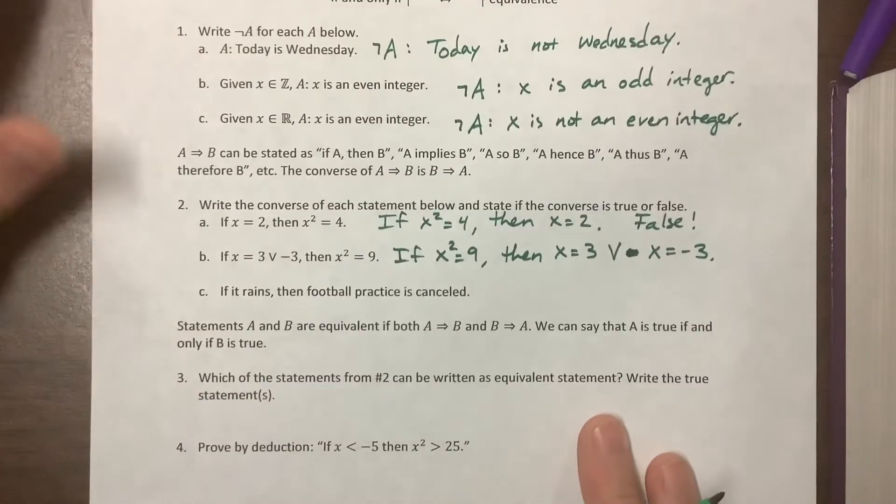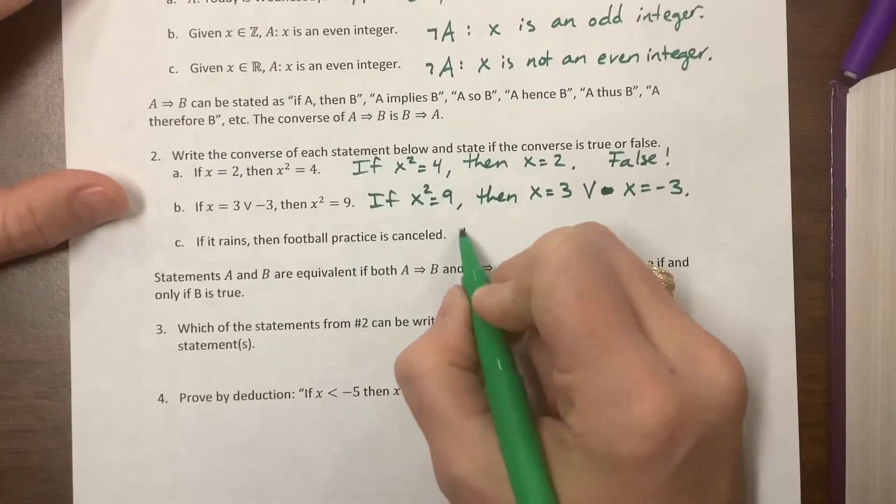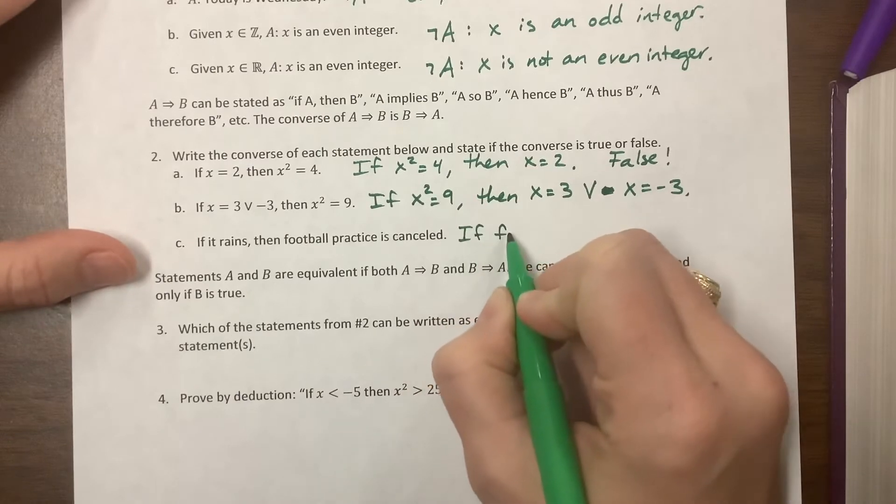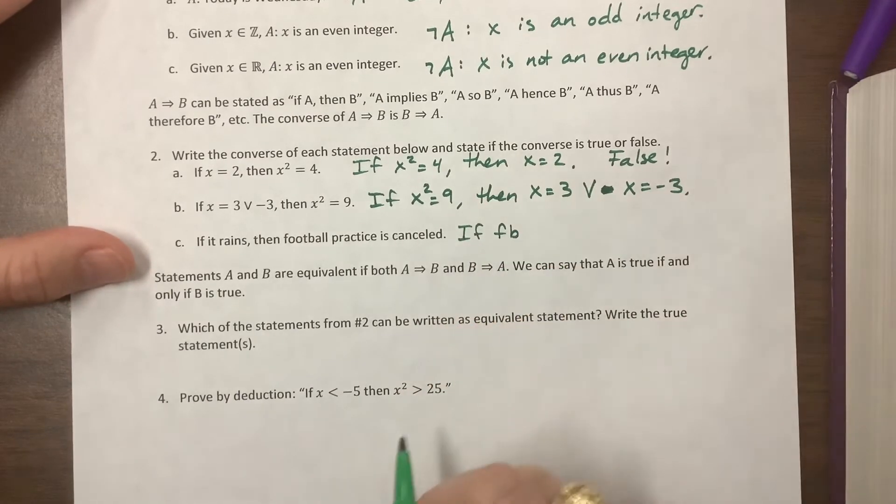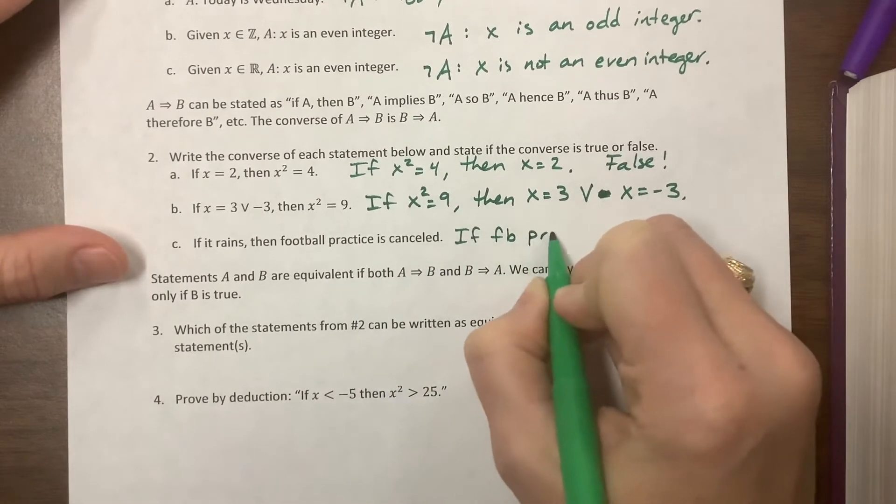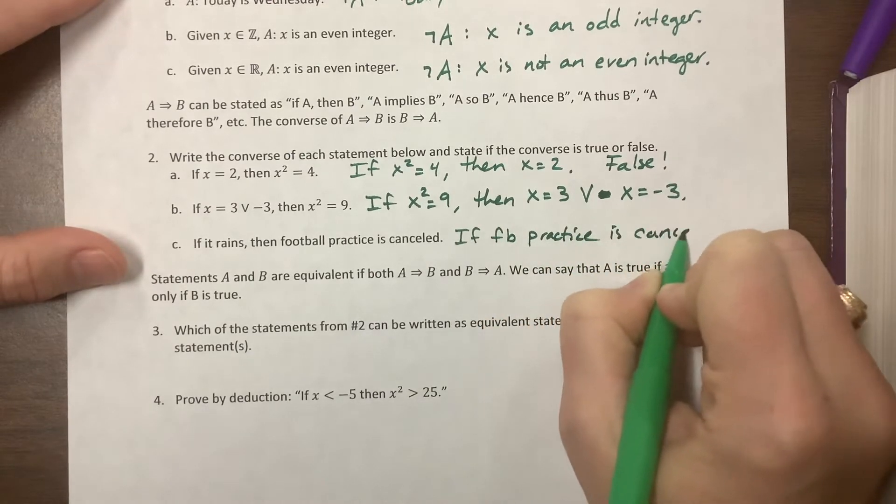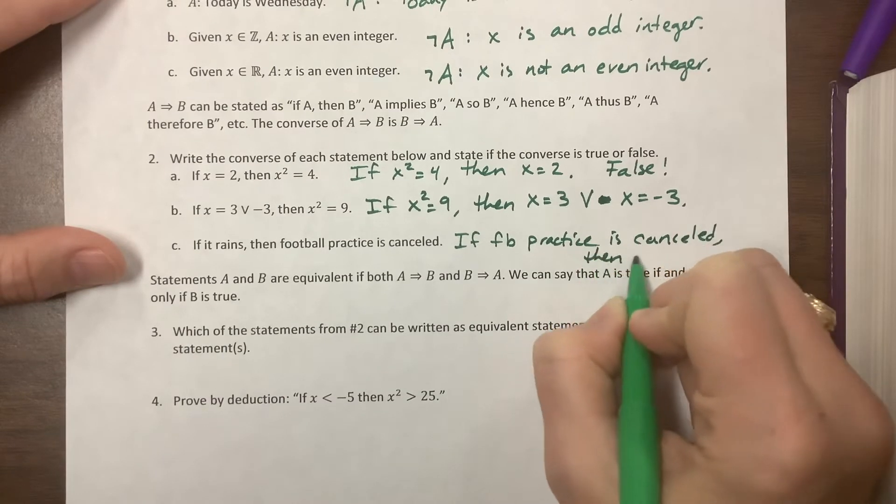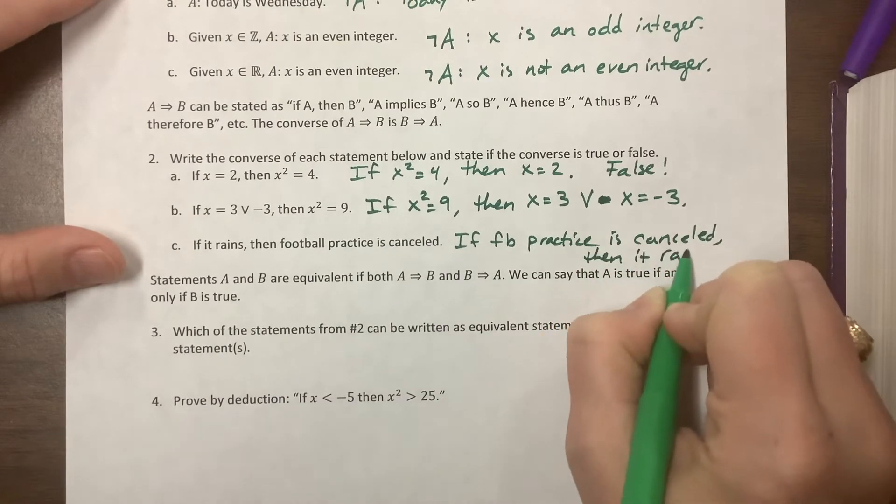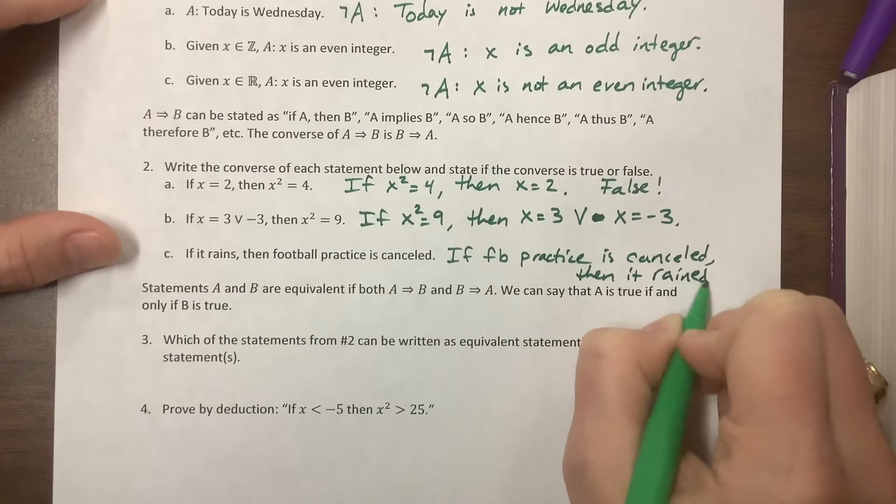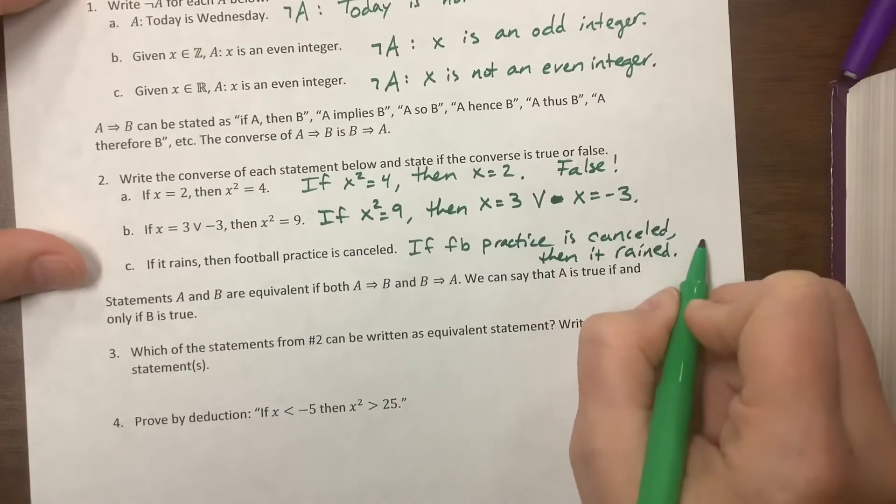The next one: if it rains, then football practice is canceled. The converse becomes: if football practice is canceled, then it rained. This would be false.